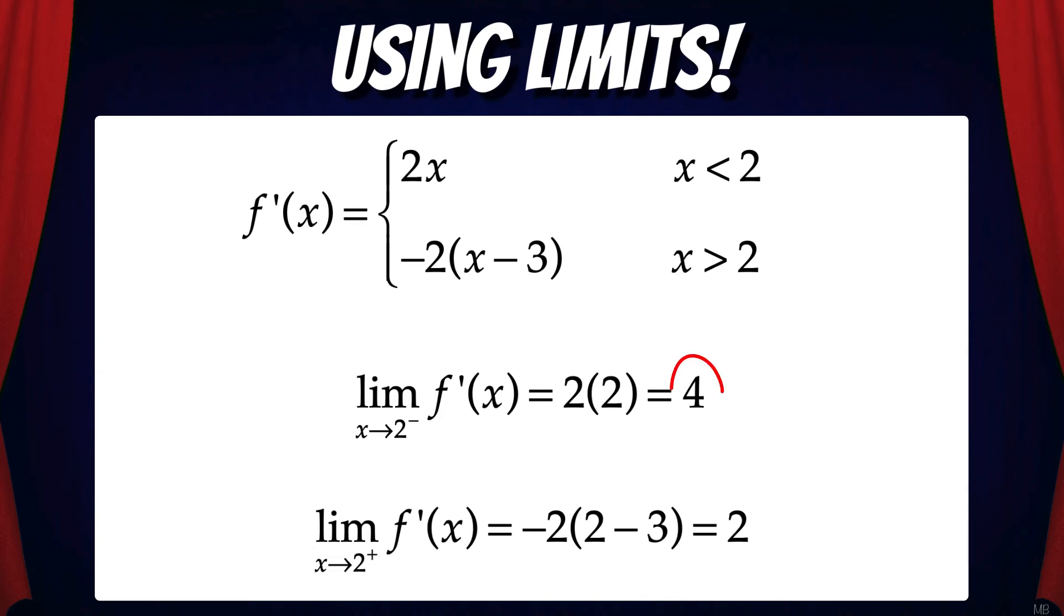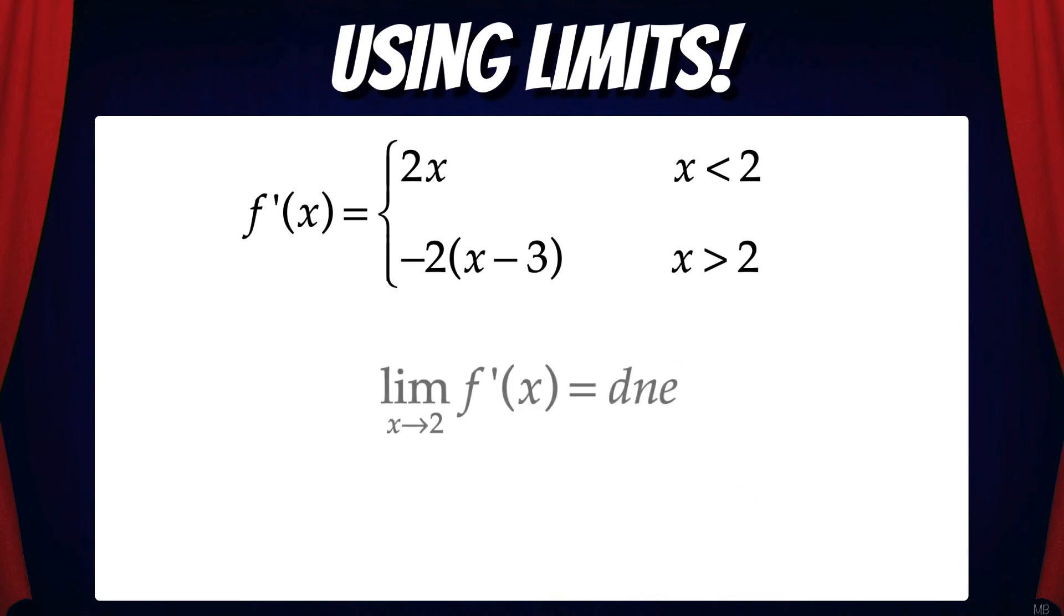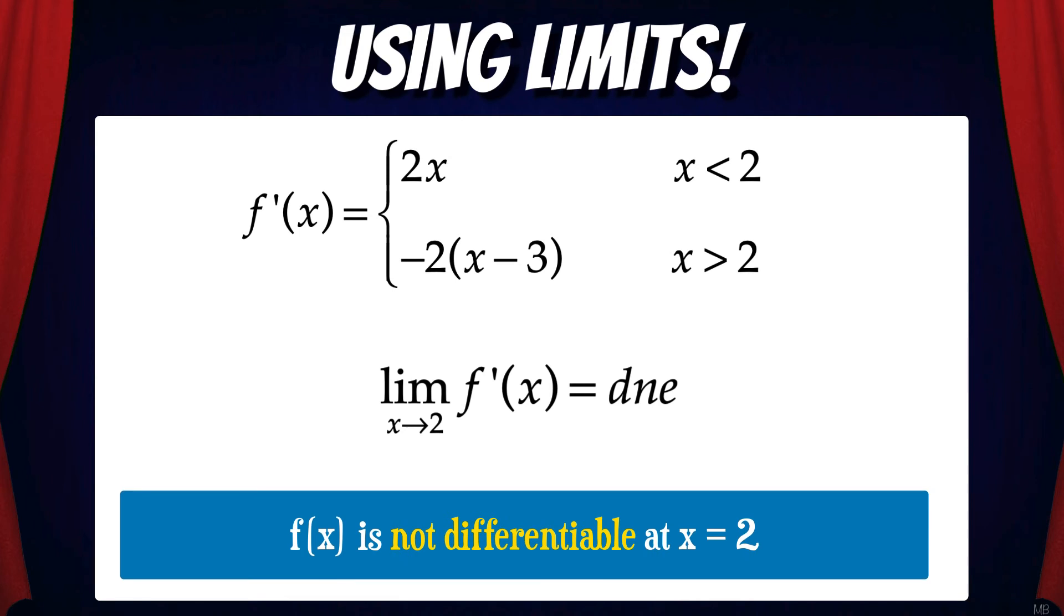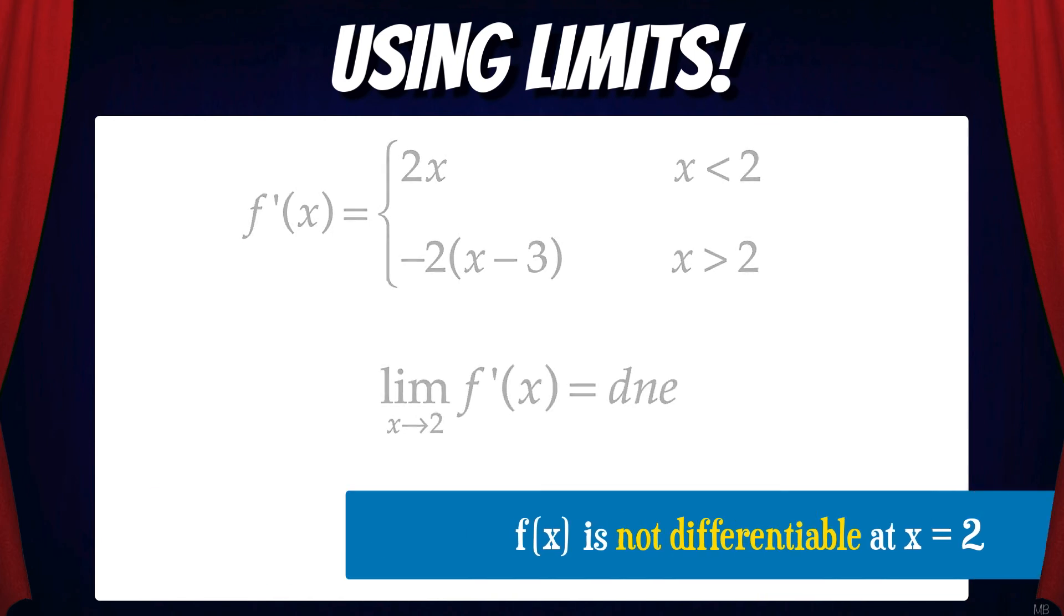In this case, the limit from the left side equals four, and the limit from the right side equals two. That means the limit of f prime as x goes to two does not exist. And since the left and right sided limits of the derivative do not match, we can conclude that f is not differentiable at x equals two.